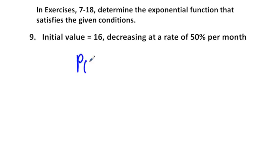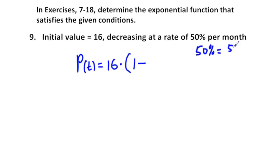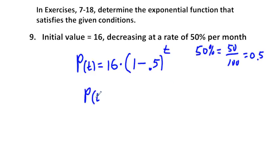Problem 9: initial value of 16, decreasing at a rate of 50% per month. 50% divided by 100 gives a rate of 0.5. So we have P sub T equals 16 times 0.5 to the power of T, where T is in months. This is essentially what a half-life equation looks like — you can write 0.5 or one-half.